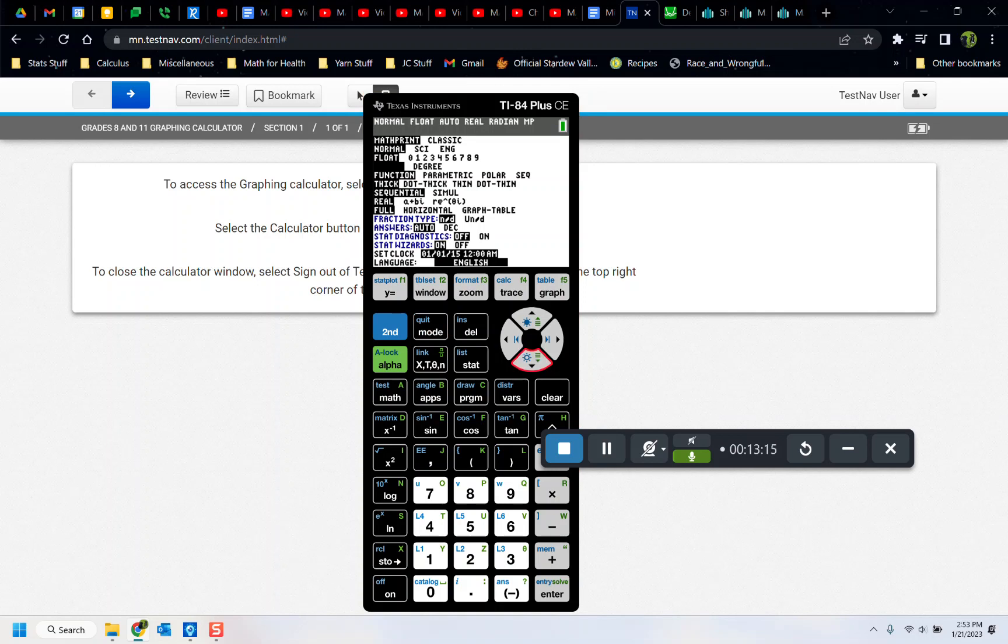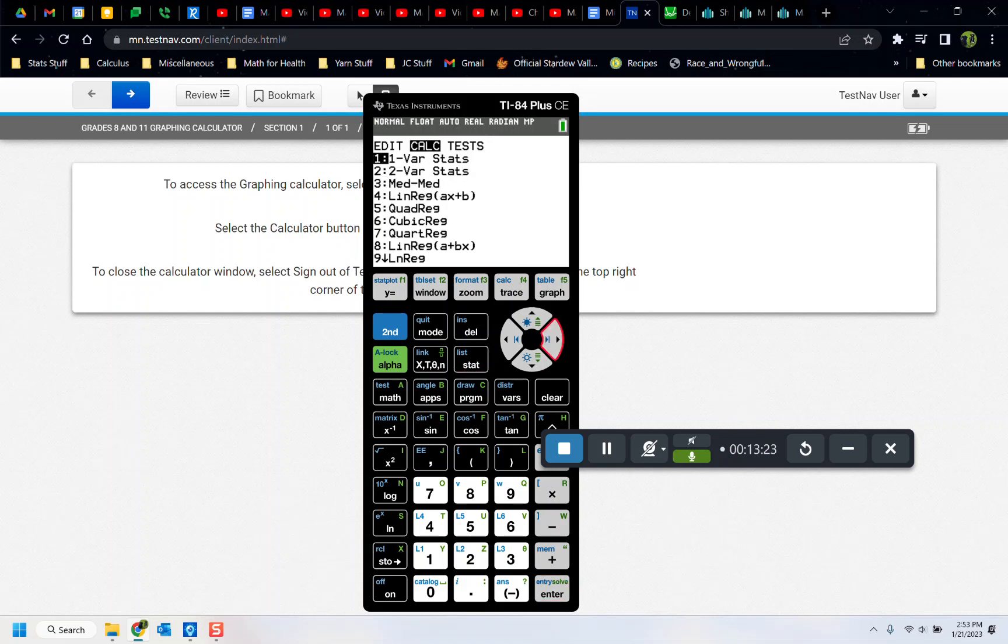But just a reminder, to turn on the correlation coefficient, you go to mode and you turn your stat diagnostics on by pressing enter on the on. And then if you run stat, calculate, number four linear regression, then it will also give you the correlation coefficient right there.